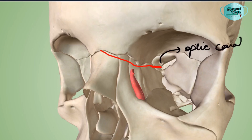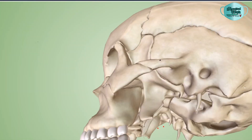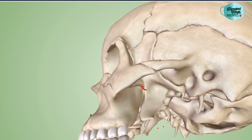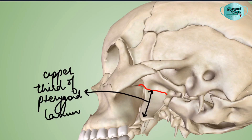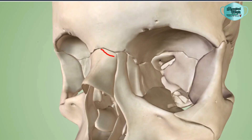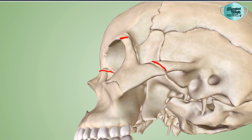When the fracture line reaches the inferior orbital fissure it splits into two. One line moves backward across the pterygomaxillary fissure — you can see it emerging from the pterygomaxillary fissure involving the upper third or root of the pterygoid lamina. From the inferior orbital fissure, the other line moves on the lateral wall of the orbit and crosses it at the frontozygomastic suture.